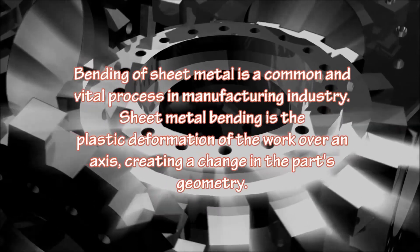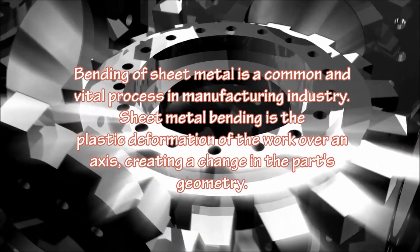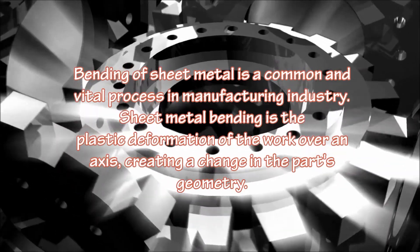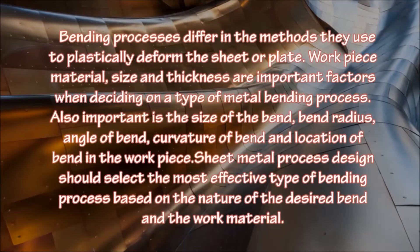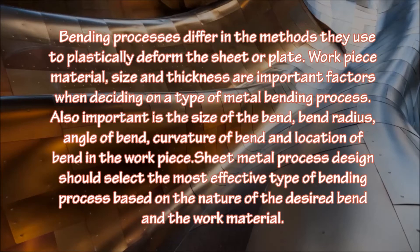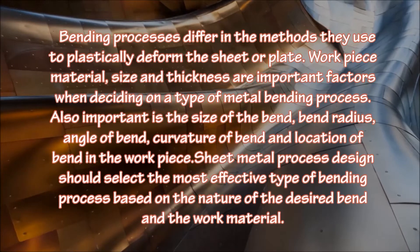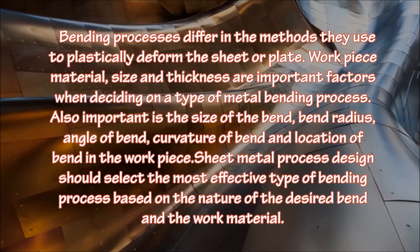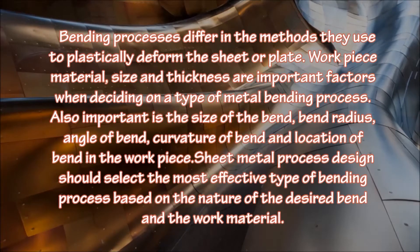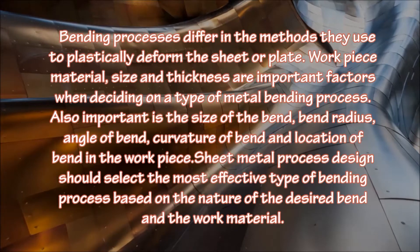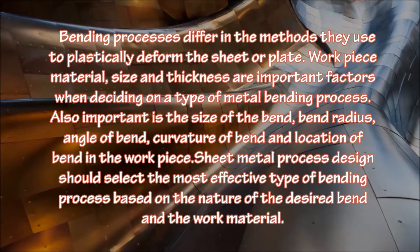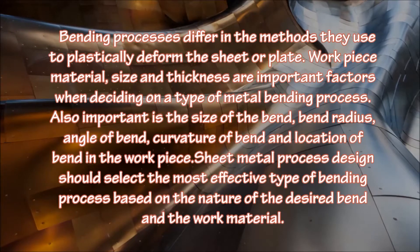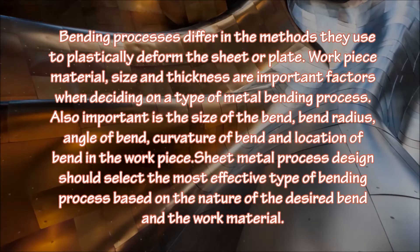Bending of sheet metal is a common and vital process in the manufacturing industry. Sheet metal bending is the plastic deformation of the work over an axis, creating a change in the part's geometry. Bending processes differ in the methods they use to plastically form the sheet or plate. Workpiece material, size, and thickness are important factors when deciding on a type of metal bending process, as are the bend radius, angle of bend, curvature of bend, and location of bend in the workpiece. Sheet metal process design should select the most effective type of bending process based on the nature of the desired bend and the work material.